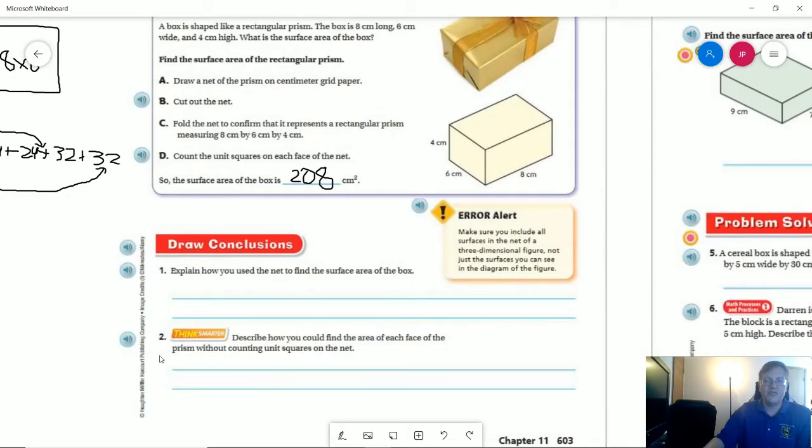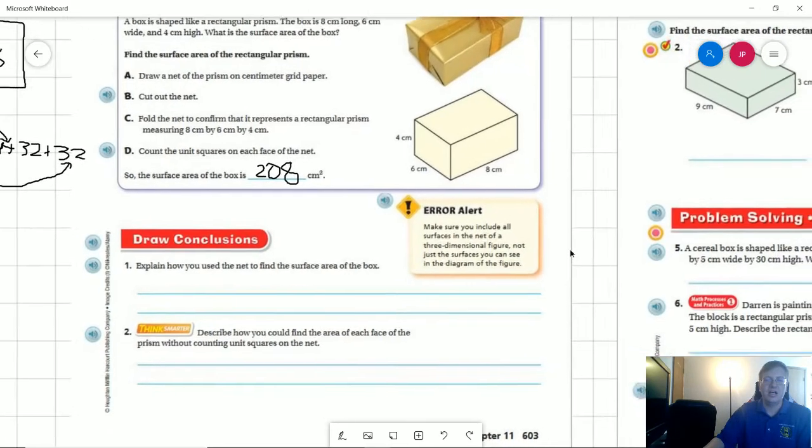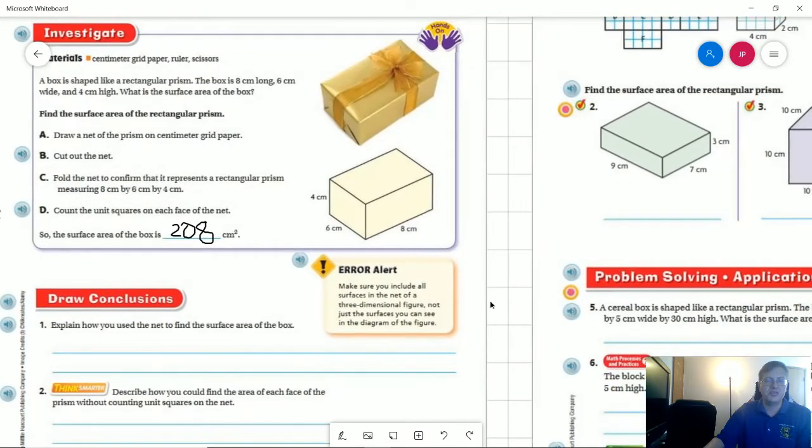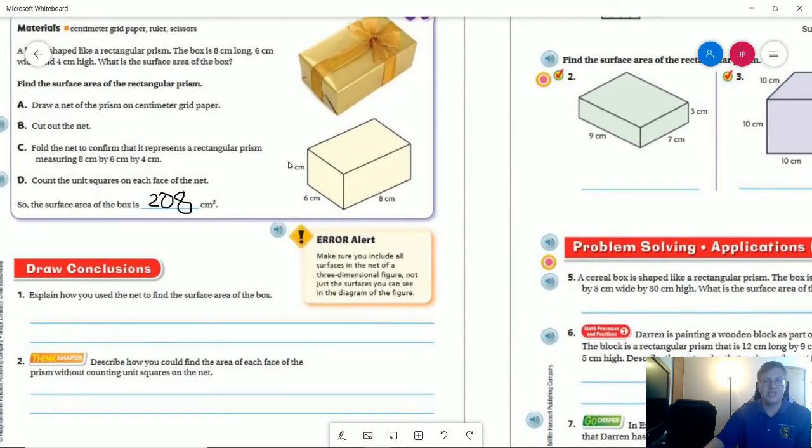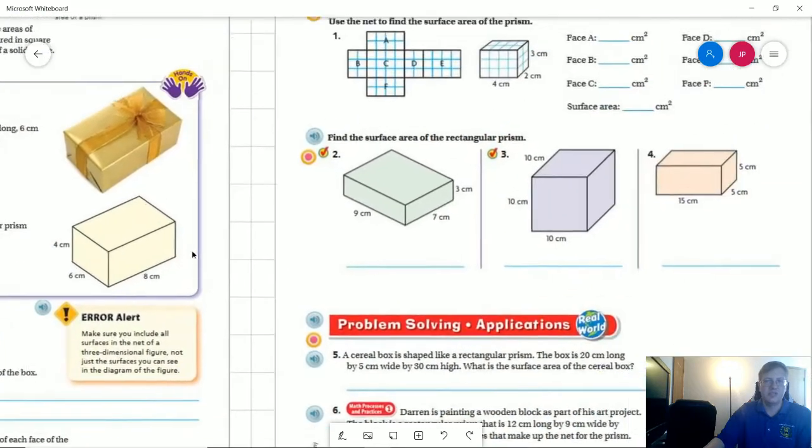So to find the face of each face of the prism without counting the unit squares on the net, that would be the trick that I was just mentioning. So I can do two groups of four times six, two groups of four times eight, two groups of six times eight without making a net to solve the problem.